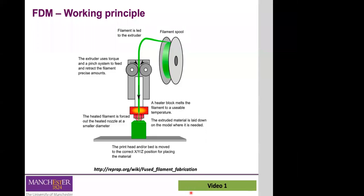How thick is each layer? That depends on the machine and the resolution of the system, which is related to the layer thickness it can print. For low-cost machines you can now buy for less than a thousand pounds, you don't get much resolution — you can print filaments of a few hundreds of microns. But if you go to more industrial systems, you can achieve filaments of almost sub-micron resolution.